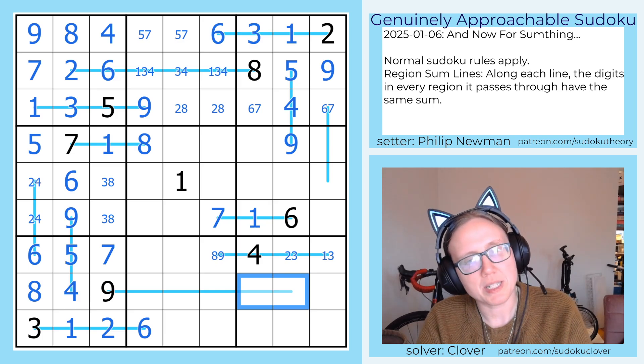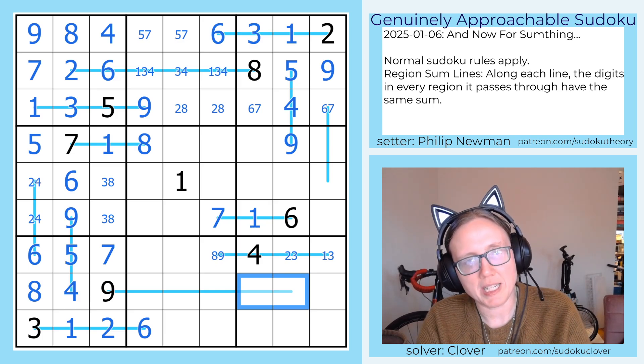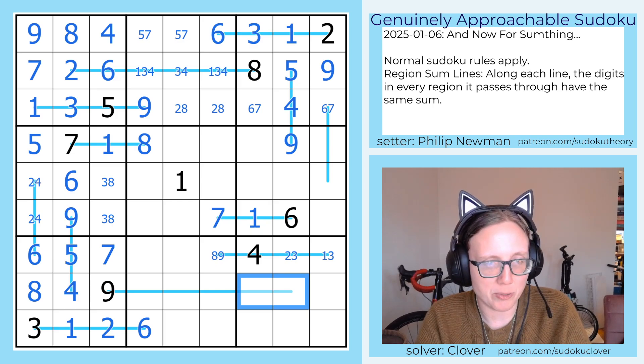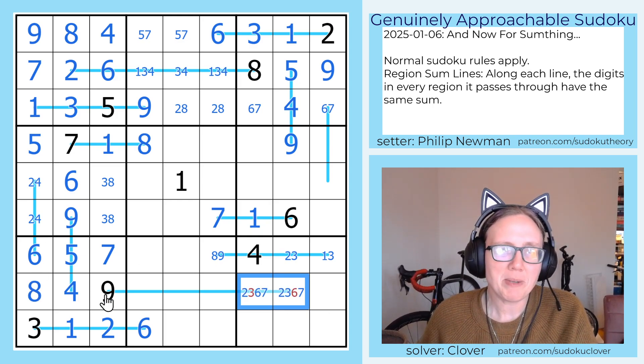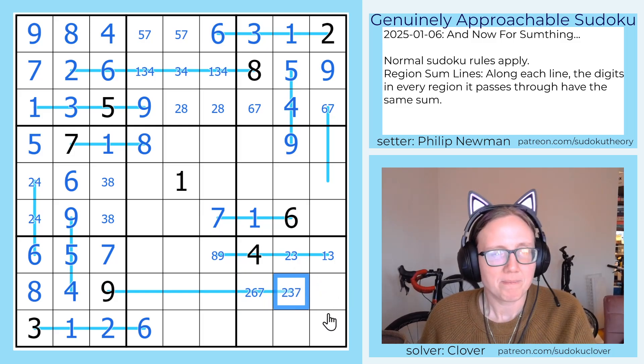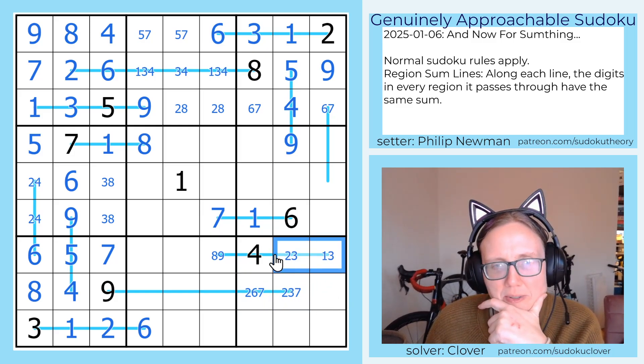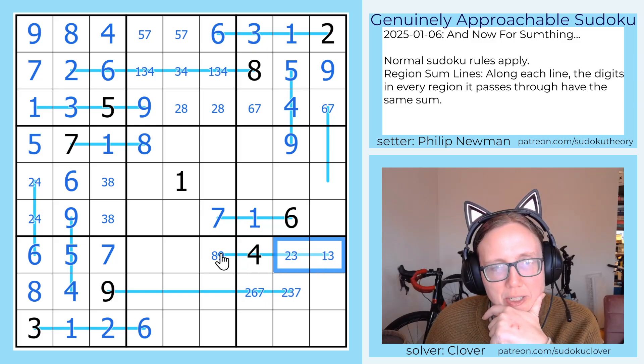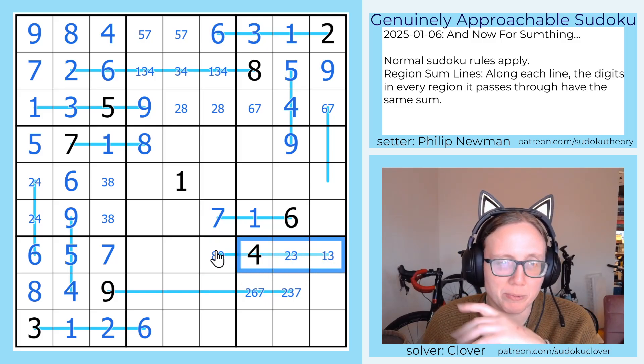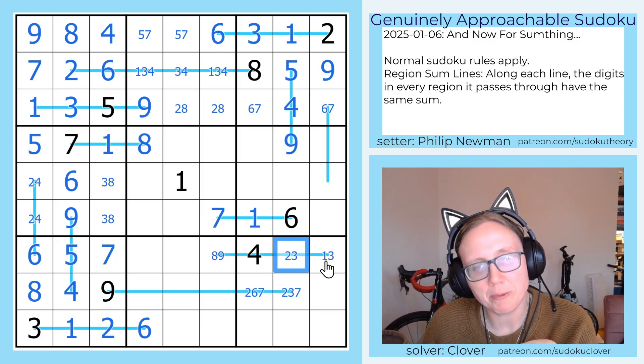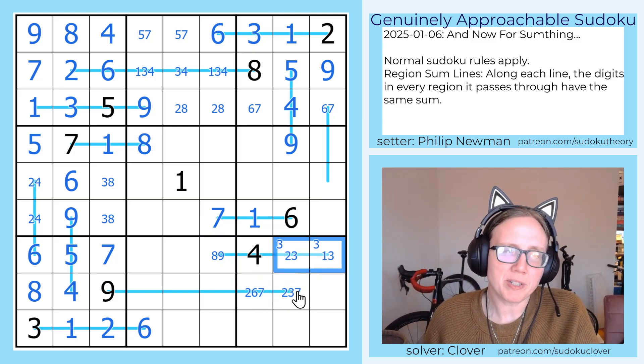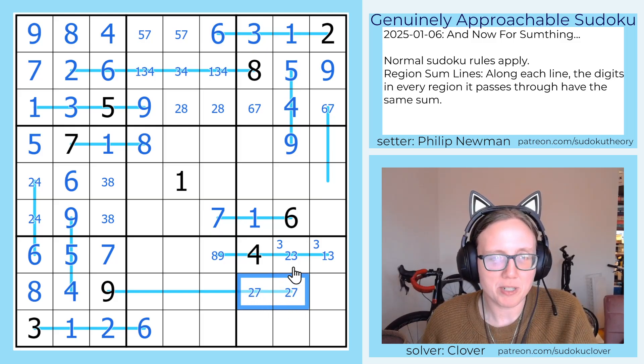The last thing that we can really work with here is this 9. This pair of digits sums to 9. It can't have a 4 in it and it can't have an 8 in it, so that leaves two ways to make 9, either 3 and 6 or 2 and 7. We can make some eliminations here. This can't be 3, this can't be 6. I think we're actually going to need to do something here. Either way, what I'm noticing is that this total will have a 3 in it because it'll either be 9 equals 2, 3 and 4 or 8 equals 1, 3 and 4.